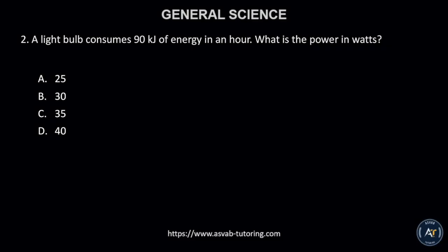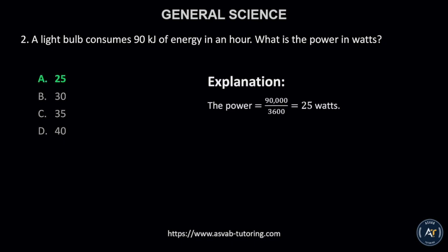Number 2. A light bulb consumes 90 kilojoules of energy in an hour. What is the power in watts? A. 25, B. 30, C. 35, or D. 40? The correct answer is letter A, 25. The solution is shown.